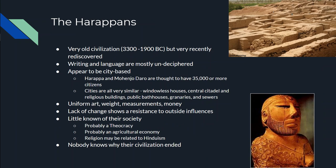The first group of people that we know of — there may have been people there before, but we haven't found any evidence of them. The earliest civilization we know of in the area of India are called the Harappans. We don't know a lot about them because they are fairly recently rediscovered — I'm talking like late 1800s, early 1900s is the first time we learned of them in modern times. And archaeologists are still working to uncover their civilization.